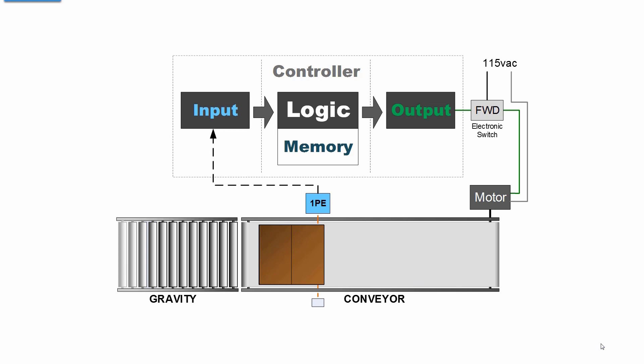The logic that was in your head that's now cloned into the controller states that if the photosensor is not blocked, the conveyor runs. If the photosensor is blocked, then the controller, through the output, releases the contacts, and the conveyor motor de-energizes, and there sits the object.